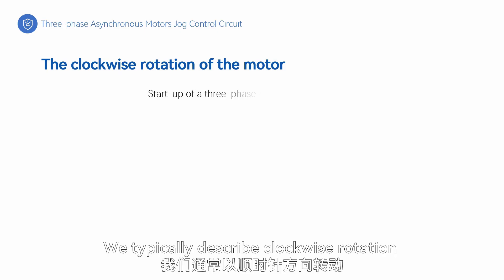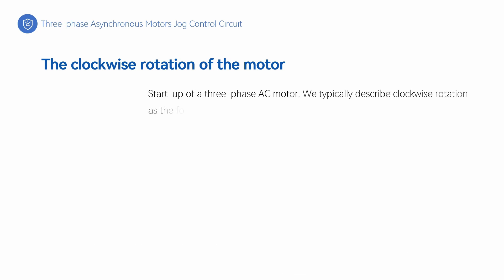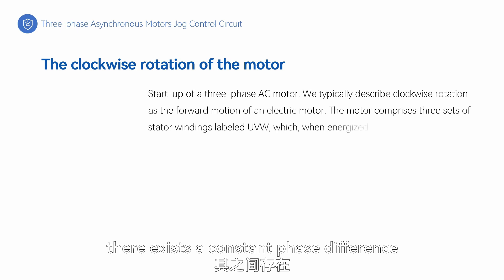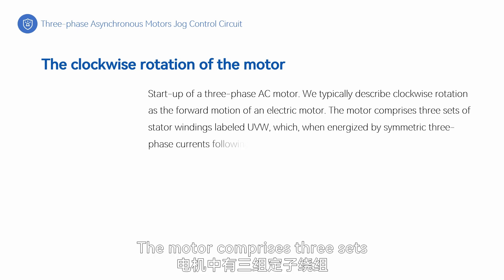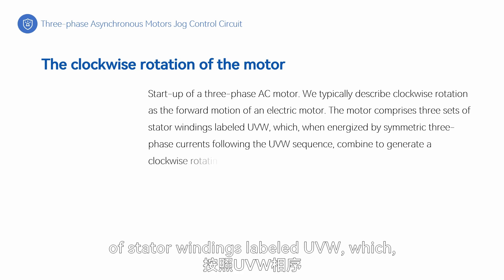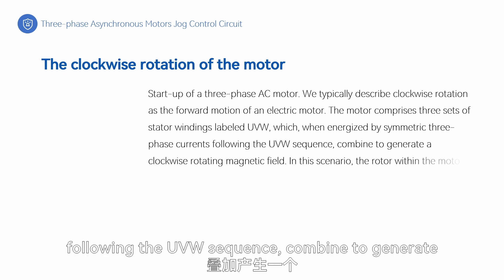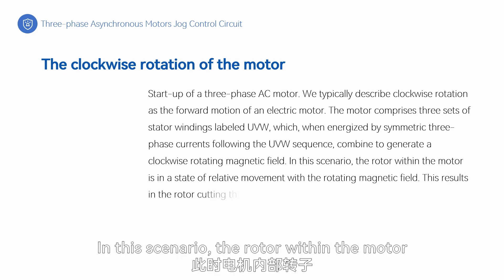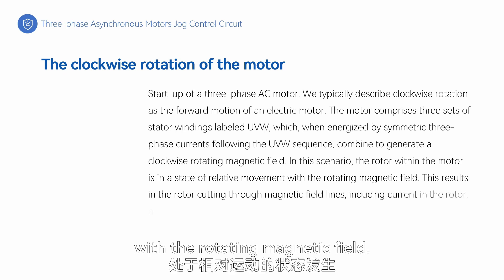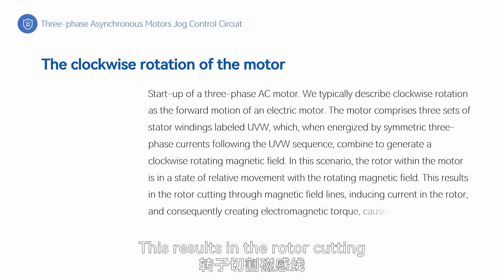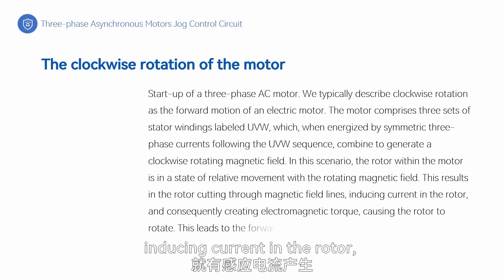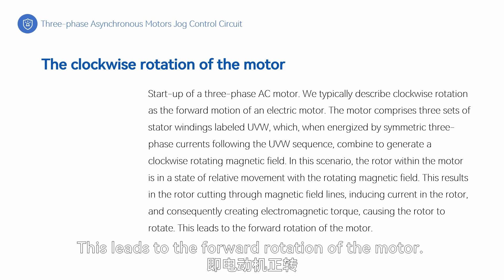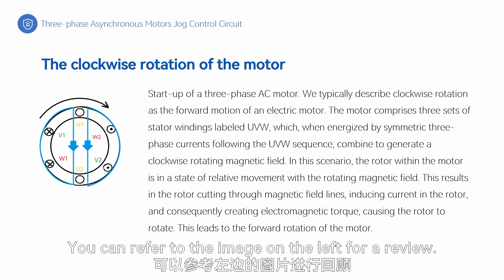We typically describe clockwise rotation as the forward motion of an electric motor. When AC current is applied to the internal windings of the motor, there exists a constant phase difference between them. The motor comprises three sets of stator windings labeled UVW, which, when energized by symmetric three-phase currents following the UVW sequence, combine to generate a clockwise rotating magnetic field. In this scenario, the rotor within the motor is in a state of relative movement with the rotating magnetic field, resulting in the rotor cutting through magnetic field lines, inducing current in the rotor, and consequently creating electromagnetic torque, causing the rotor to rotate and leading to the forward rotation of the motor. You can refer to the image on the left for a review.